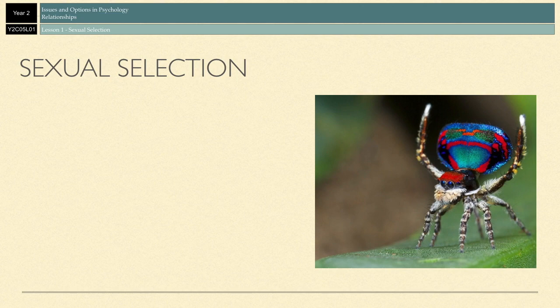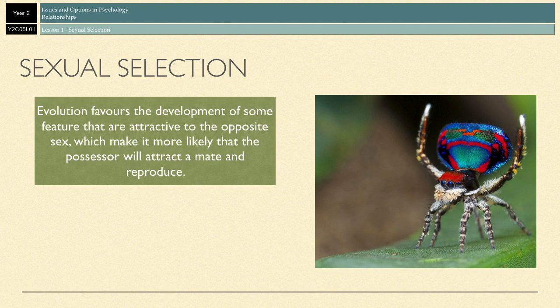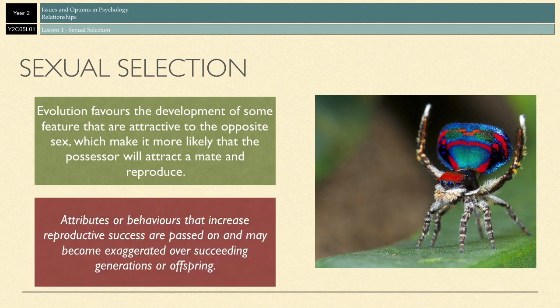If you don't have those characteristics, your survival isn't on the line. However, your ability to pass on those characteristics to your descendants is. Evolution favours the development of features that are deemed attractive to the opposite sex, making it more likely that the possessor will attract a mate and reproduce. Those attributes are then passed on to succeeding generations and may become exaggerated over time.